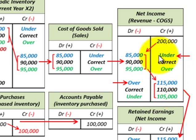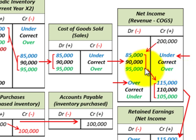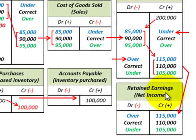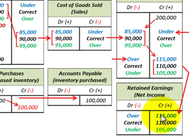So where inventory is undervalued, net income is overvalued. Where cost of goods sold is overvalued, net income is undervalued. Retained earnings has the same effect since net income flows directly into retained earnings — the same over and under values carry through.